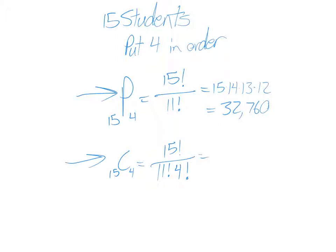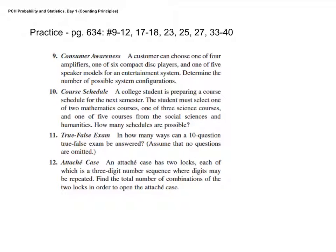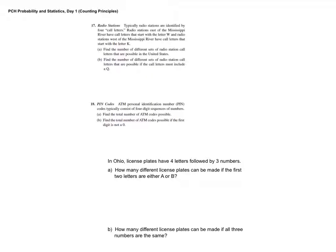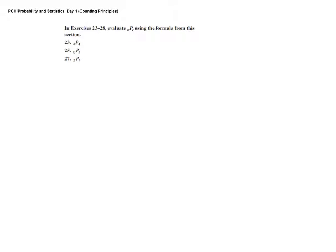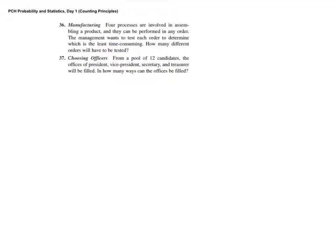So once we have our fifteen times fourteen times thirteen times twelve, that would be divided by four factorial? If you wanted to do the combination, yeah. We could keep going and do that divided by the four factorial. Any questions? All right, good. Let's practice with just a couple here.